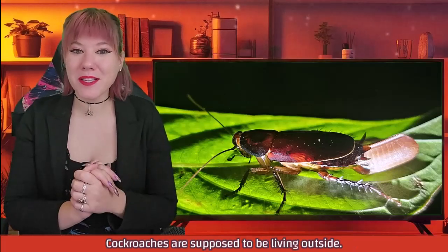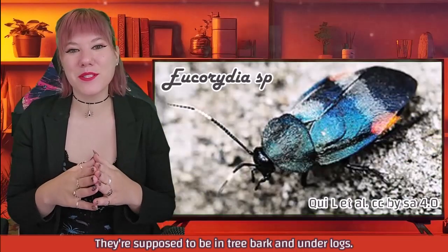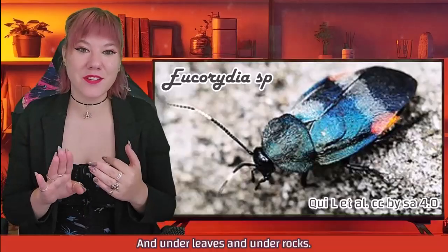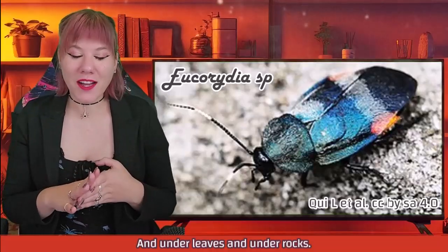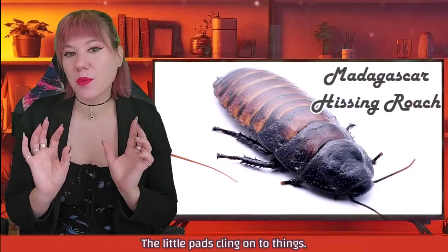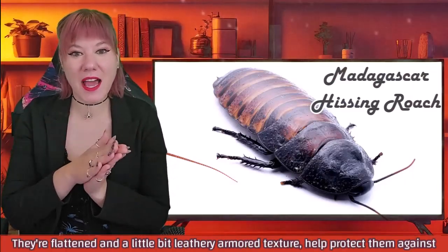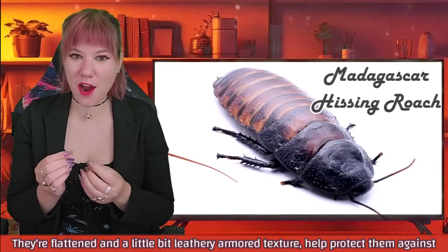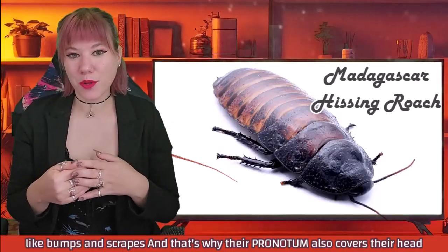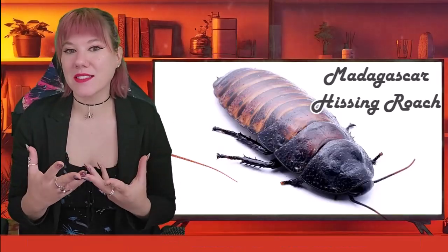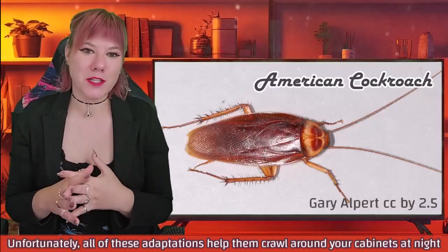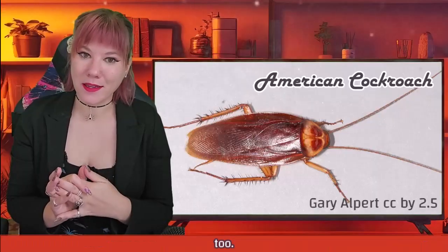Cockroaches are supposed to be living outside — in tree bark, under logs, under leaves, and under rocks. Those thick legs help push them through substrate; the little pads help them cling onto things. They're flattened and their leathery, armored texture helps protect them against bumps and scrapes. And that's why their pronotum also covers their head — because it protects the head from bumping into things.